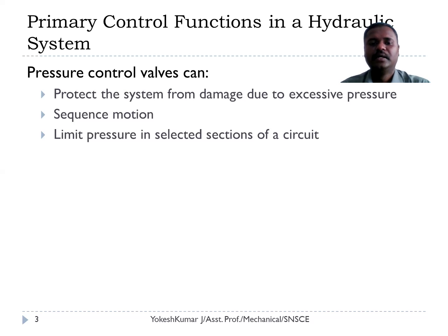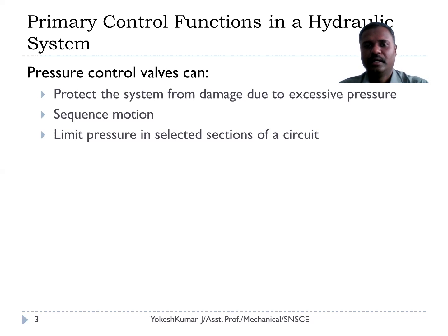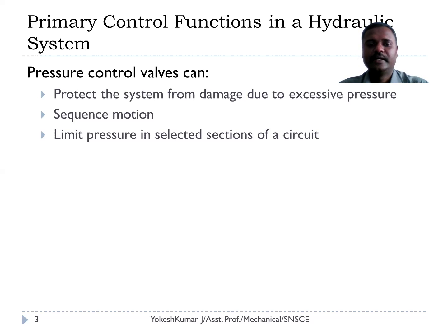The third purpose is to limit the pressure in the selected section of the circuit. For example, we are using two cylinders or more than two cylinders. One cylinder is used for a holding application and another cylinder is used for some other machining applications. One may require very less force and another may require a very high force. Since the pump is able to generate only a constant pressure, we cannot give constant pressurized fluid to these cylinders. The pressure may be reduced according to the selected sections. To limit the pressure for the selected sections of the circuit, we may use a pressure reducing valve.